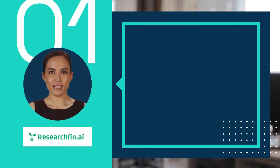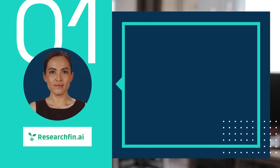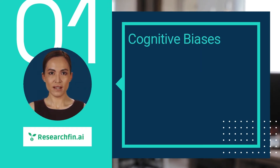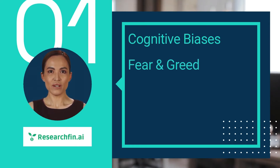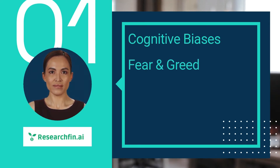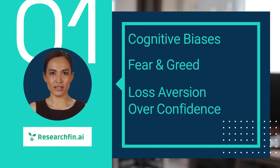The biases and emotions in trading can include: cognitive biases, such as confirmation bias and sunk cost fallacy; emotions, such as fear and greed; and decision-making processes, such as loss aversion and overconfidence.